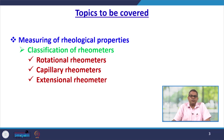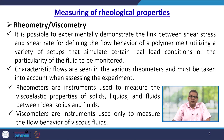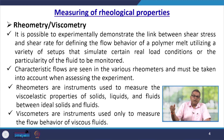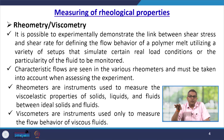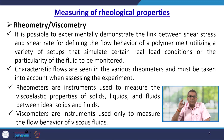We will discuss different types of rheometers, how we can classify them — rotational rheometers, capillary rheometers, and extensional rheometers. Rheometry or viscometry: it is possible to experimentally demonstrate the link between shear stress and shear rate for defining the flow behavior of a polymer melt utilizing a variety of setups. Rheometers are instruments used to measure the viscoelastic properties of solids, liquids, and fluids between the ideal solid and fluid. Viscometers are instruments used only to measure the flow behavior of viscous fluids.